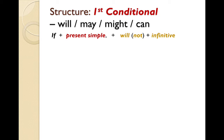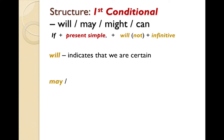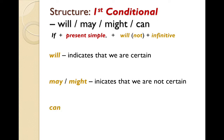Now, instead of 'will', we can also use 'may', 'might', or 'can'. What's the difference? Well, 'will' indicates that we're certain. 'May' or 'might' indicates that we are not certain. And 'can', or 'will be able to', indicates possibility.